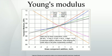It is named after the 19th century British scientist Thomas Young. However, the concept was developed in 1727 by Leonhard Euler, and the first experiments that used the concept of Young's modulus in its current form were performed by the Italian scientist Giordano Riccati in 1782, predating Young's work by 25 years.